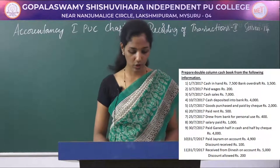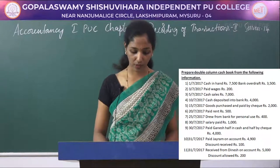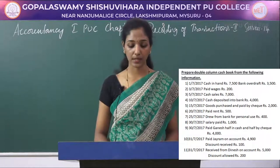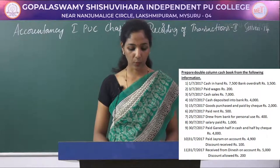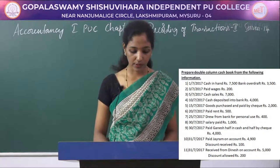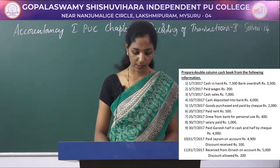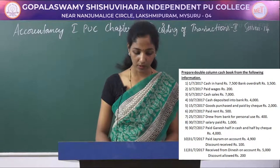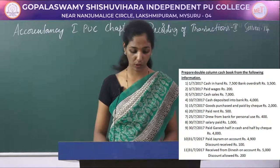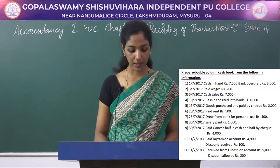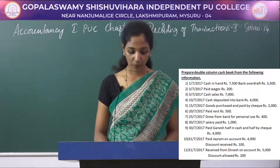Here is the example problem: Prepare a double column cash book from the following information. 1/7/2017: cash in hand rupees 7500, bank overdraft rupees 3500. 3/7/2017: paid wages rupees 200. 5/7/2017: cash sales rupees 7000. 10/7/2017: cash deposited into bank rupees 4000. 15/7/2017: goods purchased and paid by cheque rupees 2000.